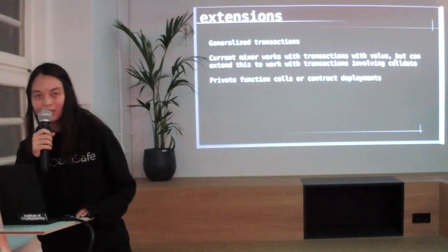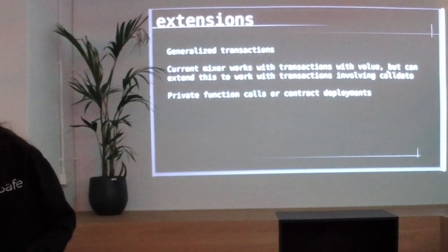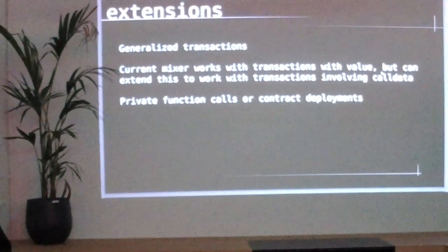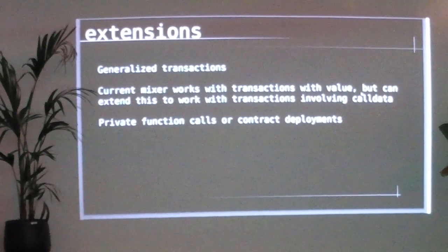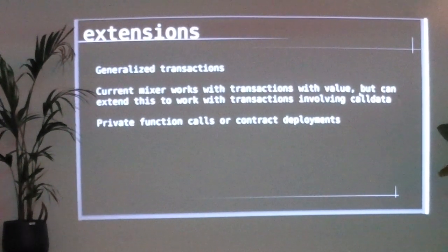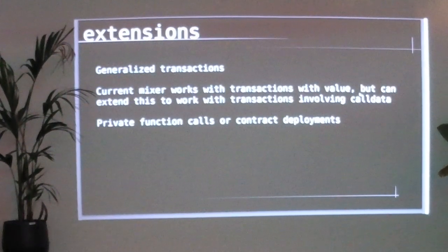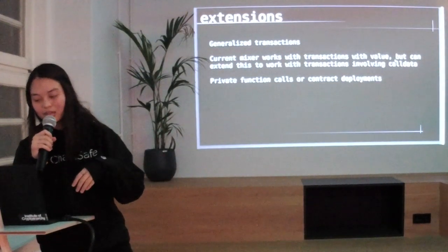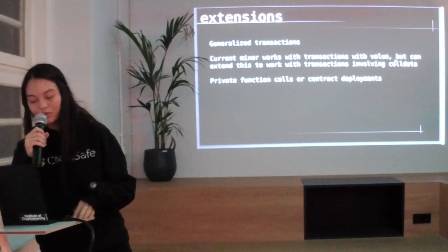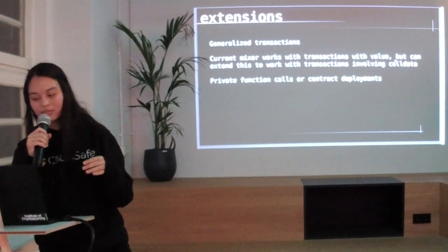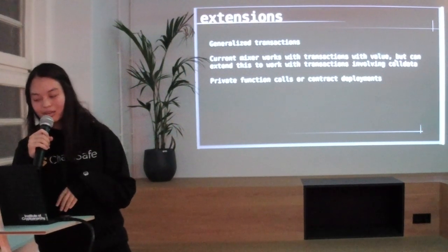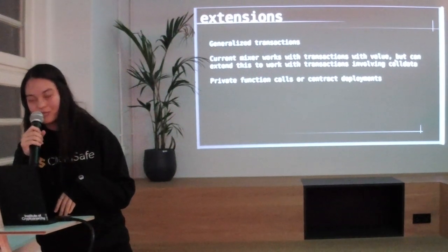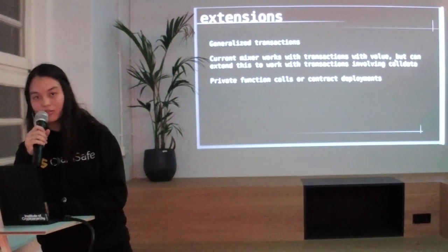Some extensions I was thinking of: one that would be really cool is generalized transaction privacy. Right now when you think of mixing, you think of ether or some monetary value, but with Ethereum you could extend this to not just the ether value transaction but to also involve the call data. What's happening in the mixer is basically that you have a transaction, it gets signed as a ring and submitted — and instead of just the value in the transaction, you could put data in the call data and have that execute. I think that would be really cool, though it raises an interesting issue of who pays for gas. This would allow for private function calls or private contract deployments.